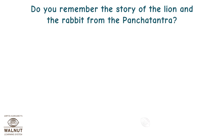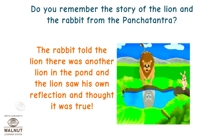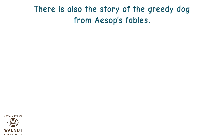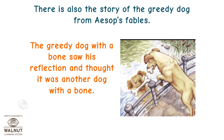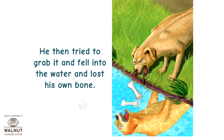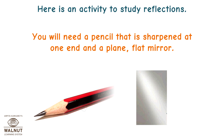Do you remember the story of the lion and the rabbit from the Panchatantra? The rabbit told the lion there was another lion in the pond, and the lion saw his own reflection and thought it was true. There is also the story of the greedy dog from Aesop's Fables. The greedy dog with a bone saw his reflection and thought it was another dog with a bone. He then tried to grab it, fell into the water, and lost his own bone. Here is an activity to study reflections.